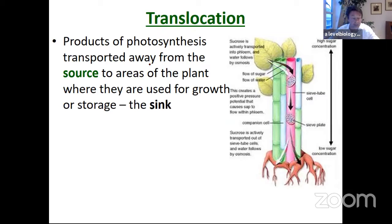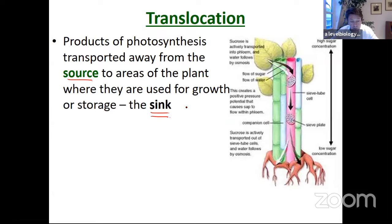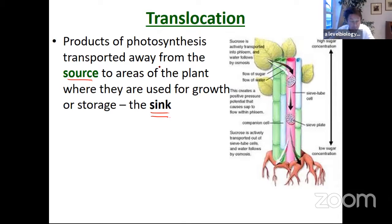Products of photosynthesis are moved from a source to a sink. The source is an area of active photosynthesis where they're being made. The sink is where they're being consumed — for example, a root or a tuber as a storage organ. In the storage organ, sucrose is stored as starch, an insoluble storage polysaccharide. Storing starch raises the water potential there, which is important. A source is an area of production; a sink is an area of consumption.